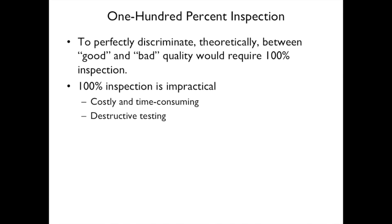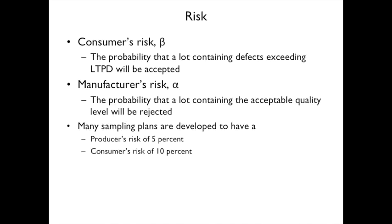To perfectly discriminate between good and bad quality would theoretically require 100% inspection, but in practice 100% inspection is impractical — it's costly, time-consuming, and impossible with destructive testing. There are two types of risk: customer's risk (beta) is the probability that a lot containing defects exceeding the LTPD will be accepted, and manufacturer's risk (alpha) is the probability that a lot containing the acceptable quality level will be rejected.